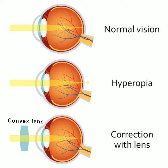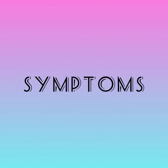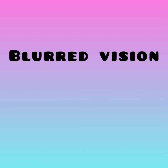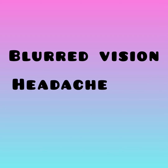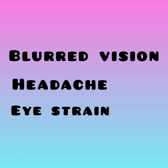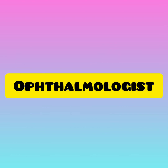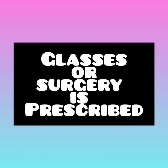In the case of myopia and hyperopia, there are some symptoms by which we can ourselves detect that an eye check-up may be needed. These symptoms can be: blurry vision — not being able to see clearly, either distant things in myopia or nearby things in hyperopia; second, headache — persistent pain in the head; and third, eye strain — excessive strain on the eyes. These are some symptoms we can notice ourselves, after which we visit an eye specialist or ophthalmologist and get an eye check-up done, following which glasses are prescribed.